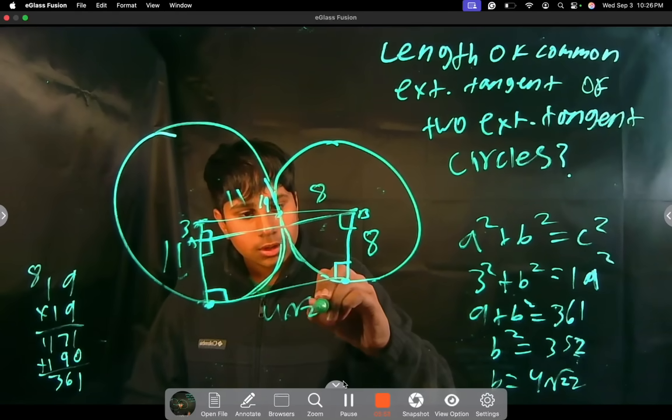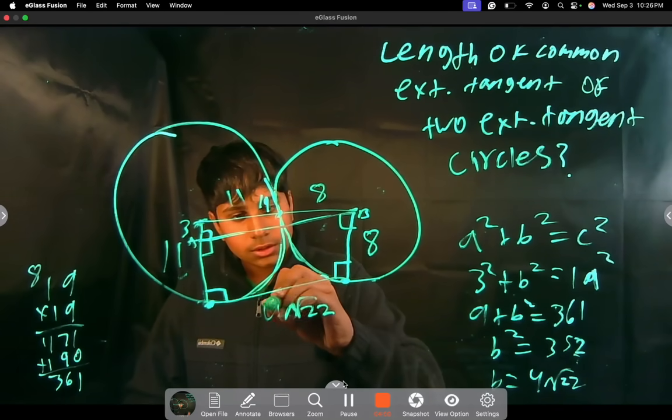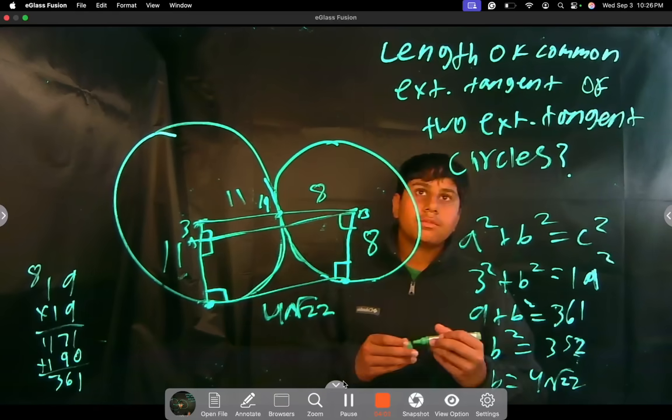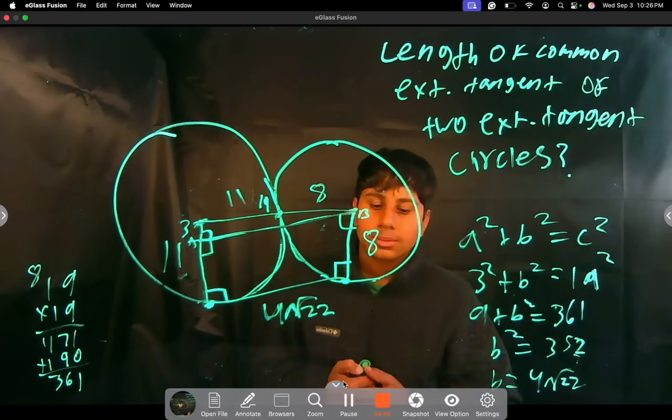This is also going to be 4 root 22, and we have found the length of the external common tangent. Thank you, I hope you learned something, see you next video.